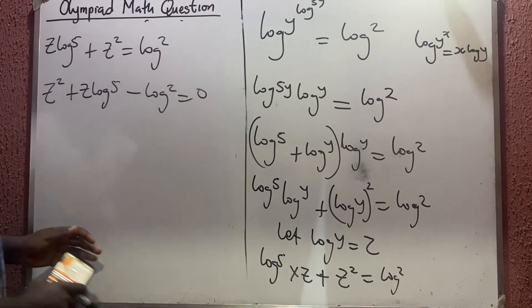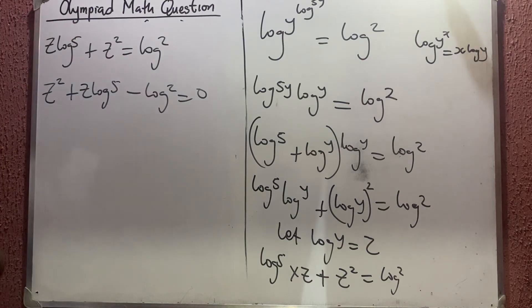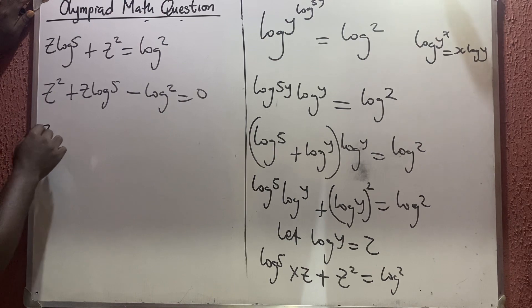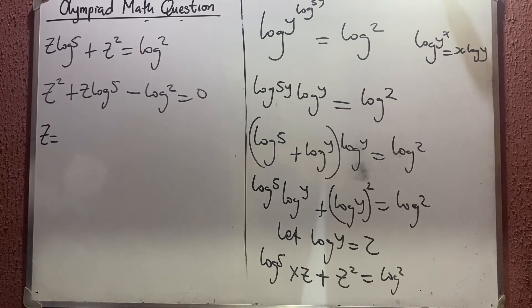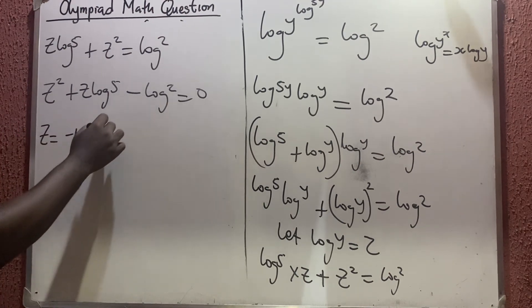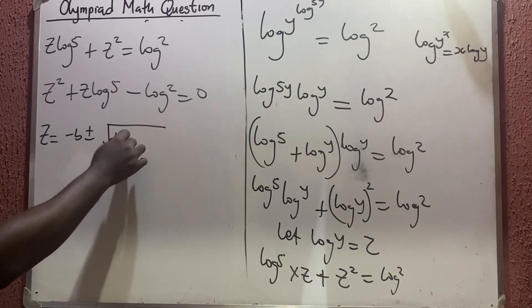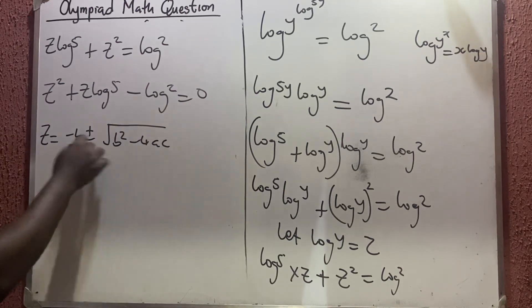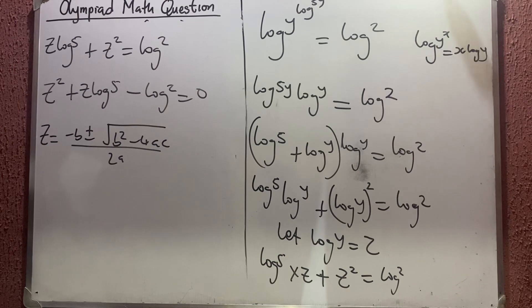So we are going to have that our z now will be minus b plus or minus the square root of b squared minus 4ac all over 2a.